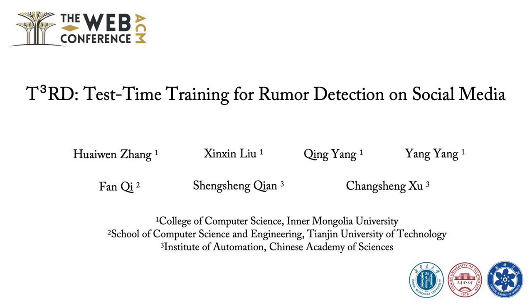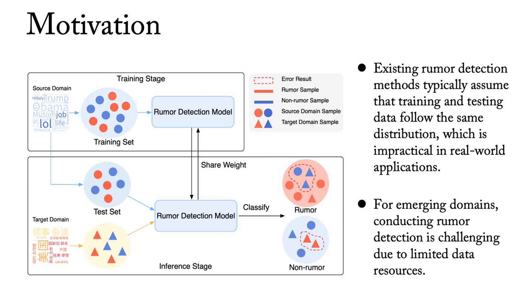We enhance rumor detection in emerging domains by incorporating test-time training and utilizing self-supervised learning to fine-tune the model with test data. Current rumor detection methods assume uniform distribution between training and test data. However, in reality, diverse claims emerge daily across domains on news platforms, making timely labeled data acquisition for emerging events challenging and resulting in suboptimal rumor detection performance.